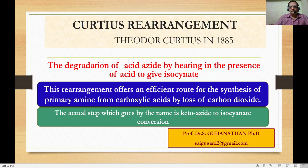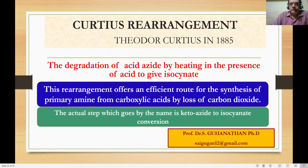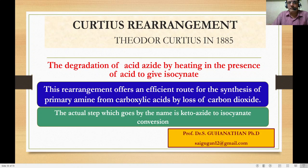Welcome. We will have a discussion about the Curtius rearrangement, introduced by Theodore Curtius in 1885. The rearrangement reaction is a conversion of acid azide (acyl azide) into isocyanate, or simply ketoazide into isocyanate. Once the isocyanate is prepared, we can convert it into various products like primary amines, urethanes, and urea.